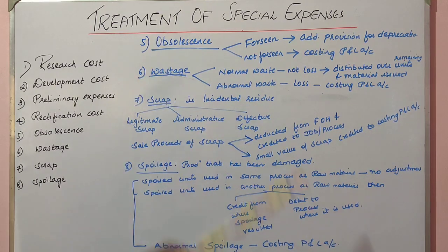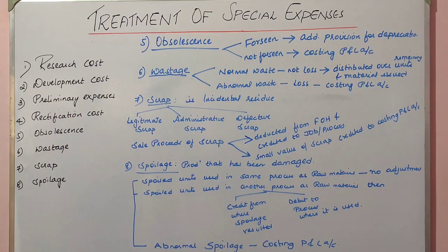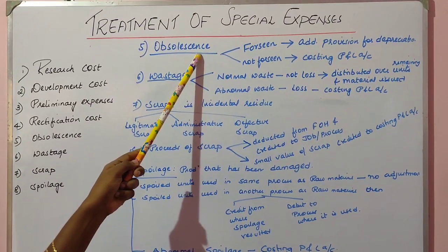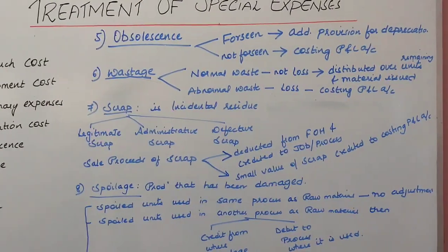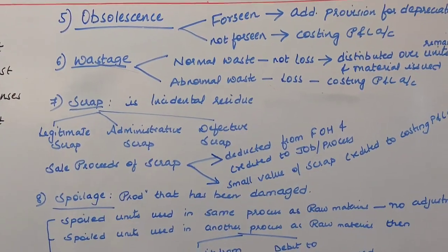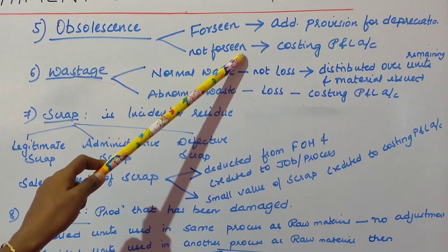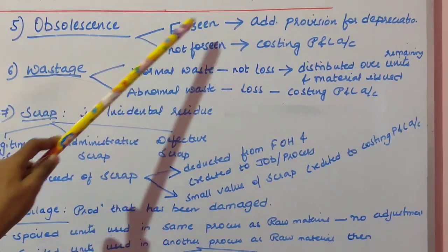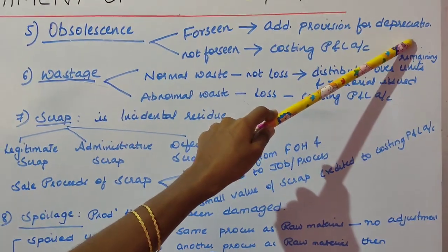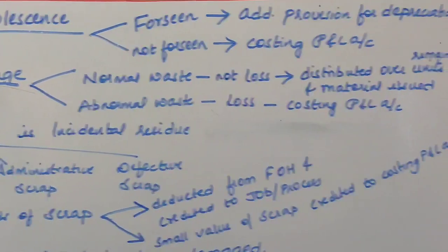Treatment of obsolescence in cost accounting: If the obsolescence is foreseen — that is, the organization can estimate the loss in asset value beforehand — the loss is covered by making an additional provision for depreciation, i.e., by increasing the rate of depreciation. If the obsolescence is not foreseen — the loss in asset value cannot be estimated beforehand — then the loss is posted to the Costing P&L account.